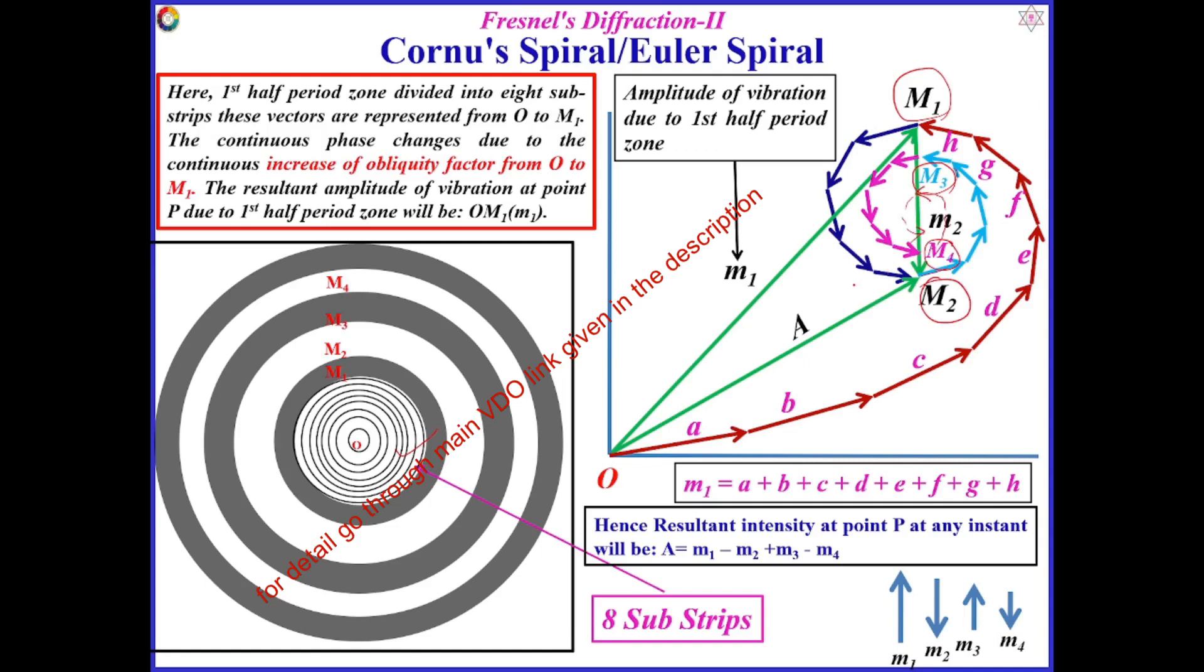Like this, Fresnel has been cut. So this spiral-like structure, whatever is represented mathematically, the amplitude distribution of all the half-quarter zones by considering strips, is called Cornu's spiral or Euler's spiral.